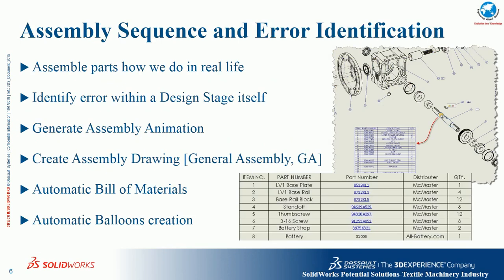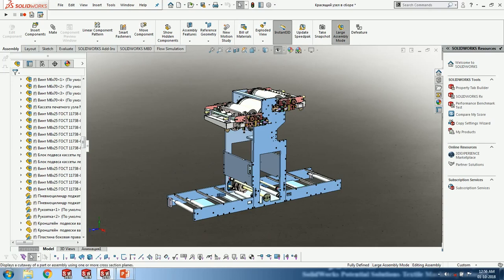The next topic is assembly sequencing and error identification. In real life, at the design stage itself we can check for mating errors, interferences between two components, or collisions. Animations can also be generated for assemblies — very useful for manufacturers to understand the assembly sequence. These animations can be shared via mobile or exported as AVI or MP4 video files. We can instantly create a general arrangement drawing and an automatic bill of materials, so we never miss part descriptions. Balloon creation and the bill of materials can be easily generated.